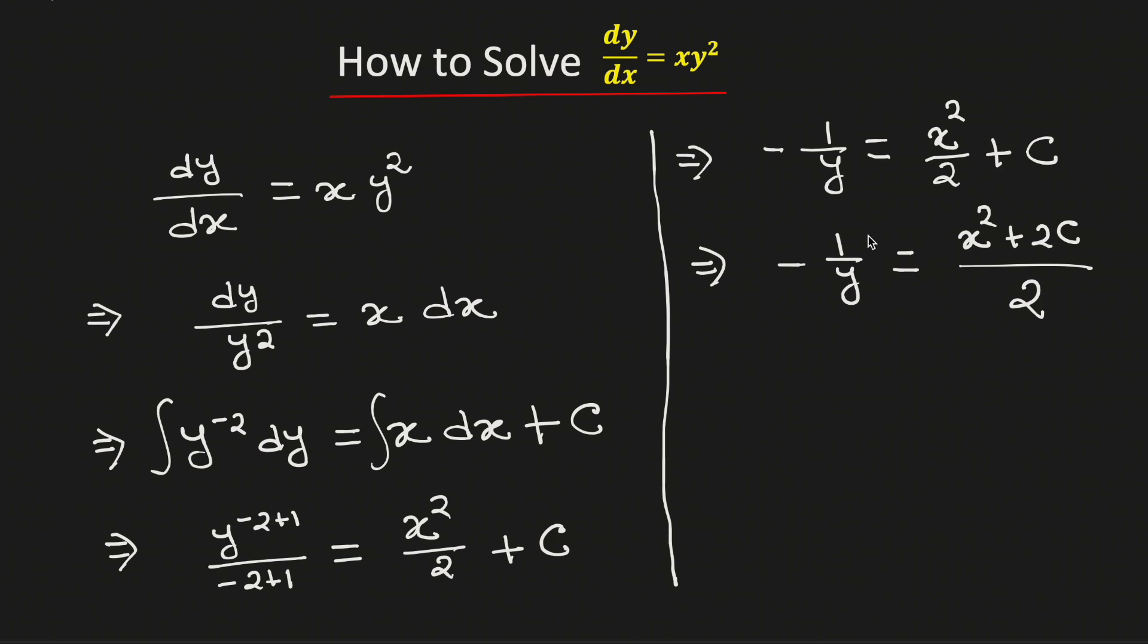Now we will take the reciprocal of both sides. By doing so, we will get y is equal to negative 2 divided by x² plus 2c.